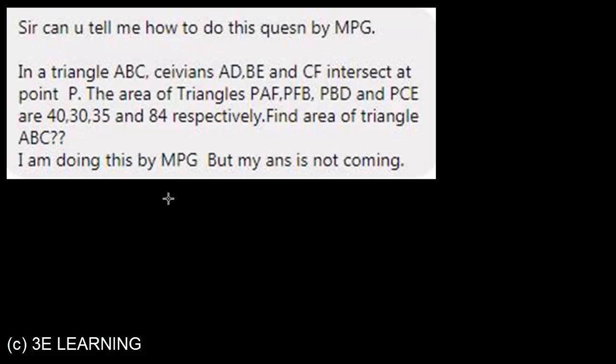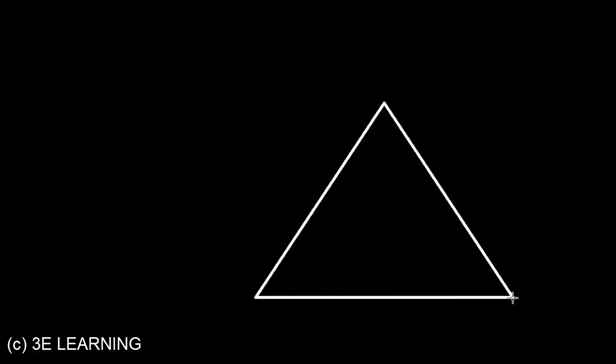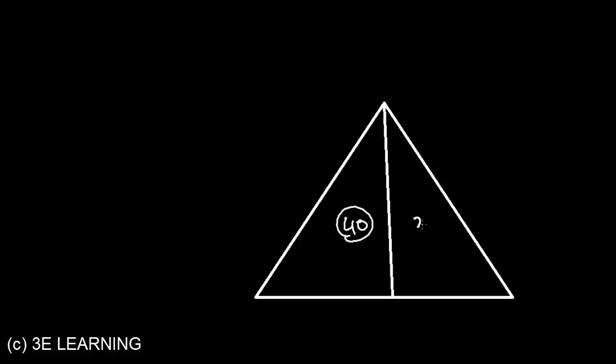I hope you have solved the question or at least read it. In this question, I am going to use two concepts: one is the MPG and second one is the area base ratio. First, check what is the area base ratio. If we have any triangle, say ABC, and if we have a line which divides triangle in two equal parts with some base, the area base ratio states that if our area is 40 to 20, it means our base should be 4 to 2 or 2 to 1.